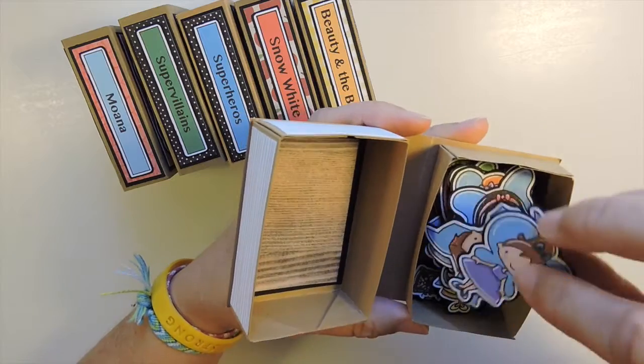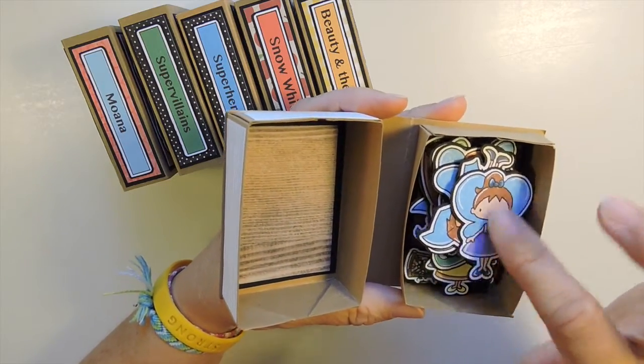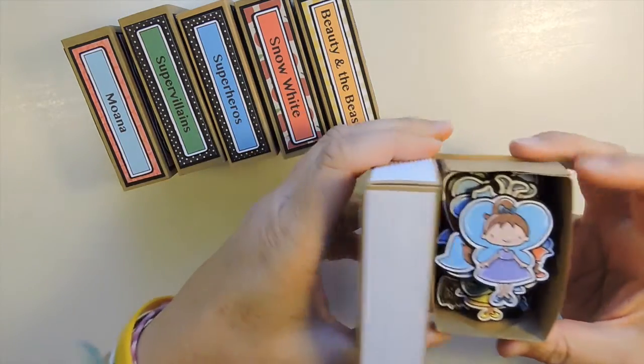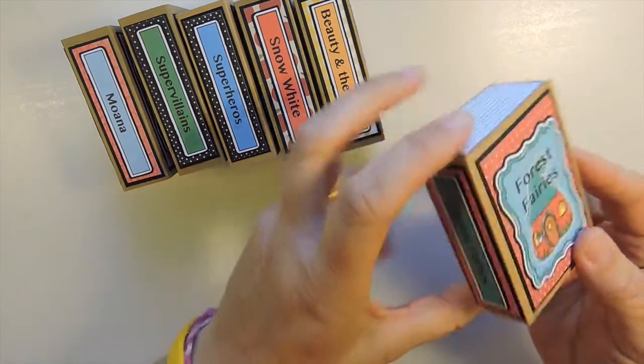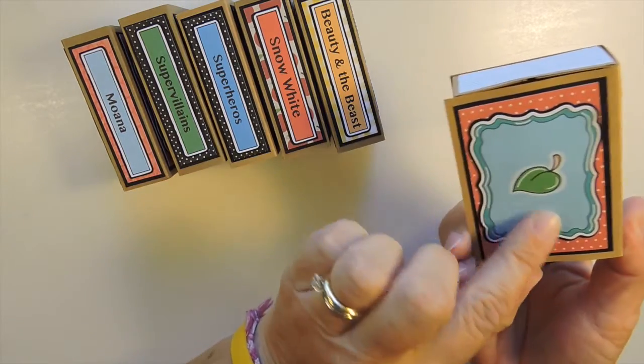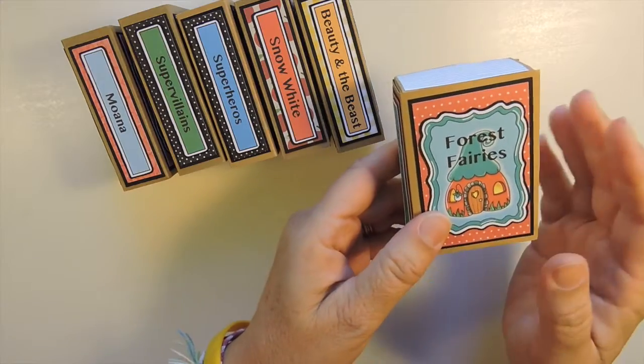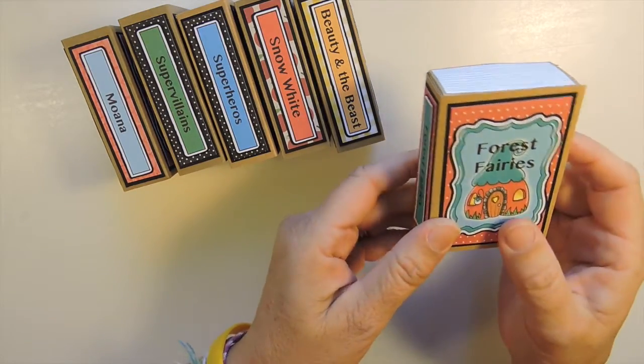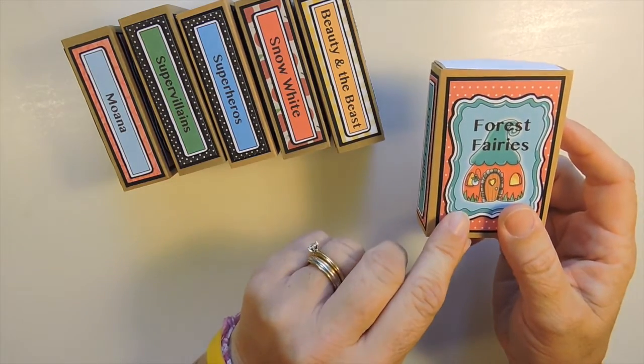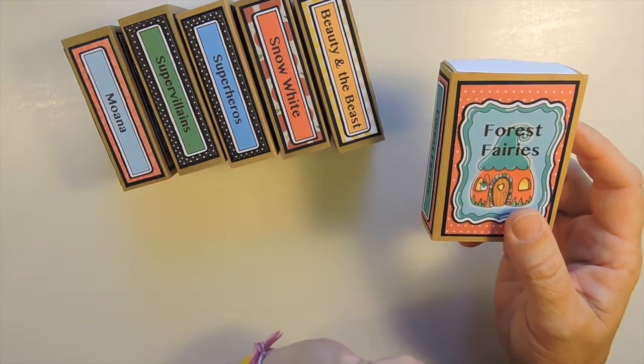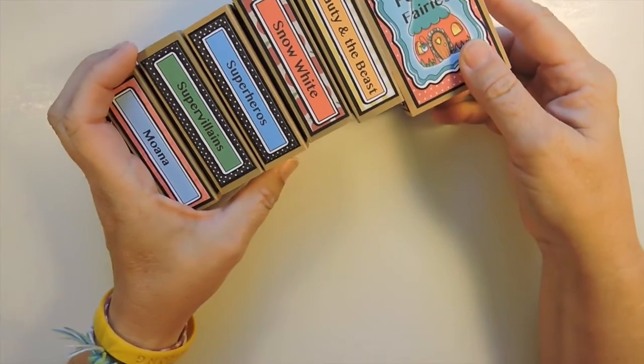So the way this works is that I have the digital file for all the little items, so all the characters that go inside for the cover, the side, and the back. So you purchase the file and then you can cut these out, print them and cut them, and I also have them available in black and white so you can color them yourself if you want. And that file comes with it as well.